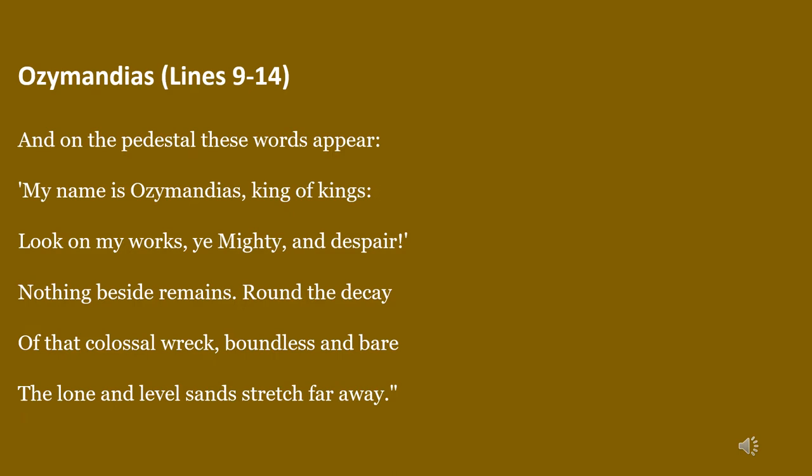Hello dear students. In this video we will discuss the last six lines of the poem Ozymandias, a sonnet written by P.B. Shelley. In the first video of this poem, I forgot to mention certain facts. This poem was published in the year 1818, and it is a sonnet. Its rhyme scheme is ABABABCDCEDEDF.